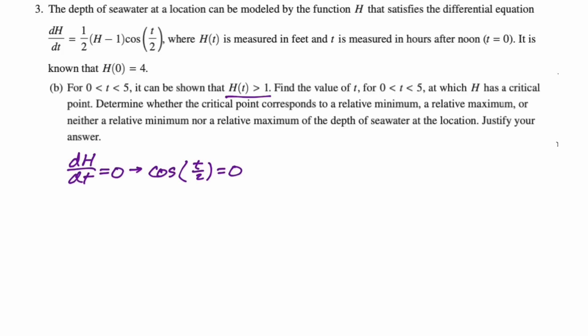Another way of doing it is to say that t over two must equal pi over two, and therefore t would equal pi. However you get to it, t is definitely going to be equal to pi in this case. So now what we need to do is figure out, so that's our critical point. Determine whether the critical point corresponds to a relative minimum, maximum, or neither. If you think back to the slope field, it's definitely a relative maximum. We just have to justify that it's a relative maximum.